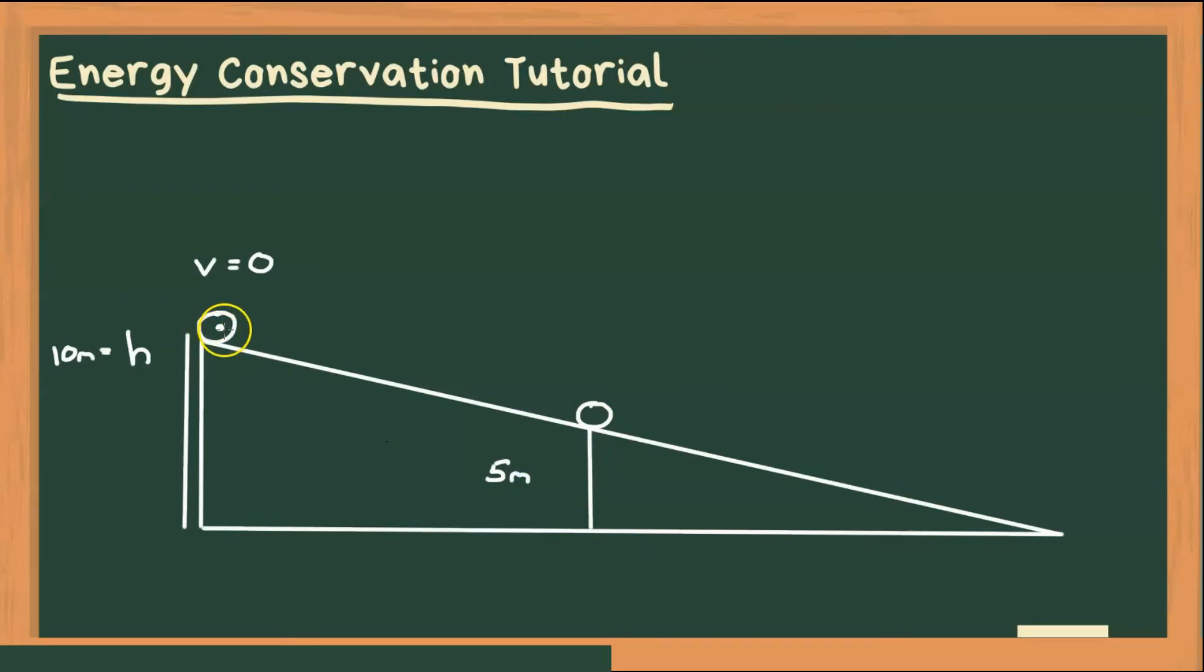Alright, so let's call this point A. You can call it whatever you want. You can call it point W if you want to. But let's just stick with A and B. So point A, and this will be point B. And what I want to know is the velocity at B.